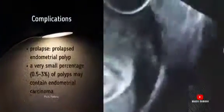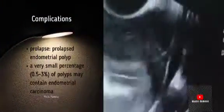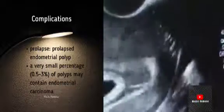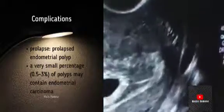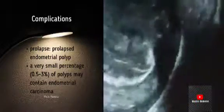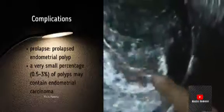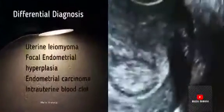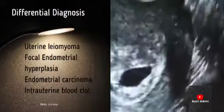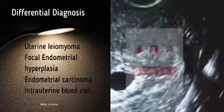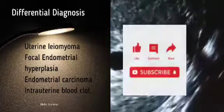After menopause, polyps can cause postmenopausal bleeding. Sometimes the polyps can prolapse through the internal os, or rarely they can have a malignant change. Hope you learned something from this video — thank you very much.